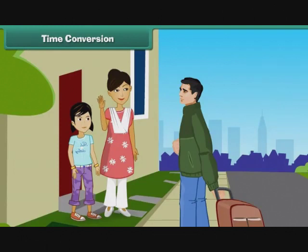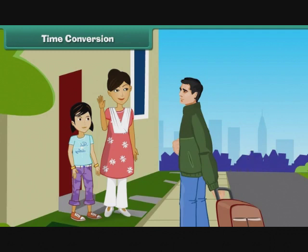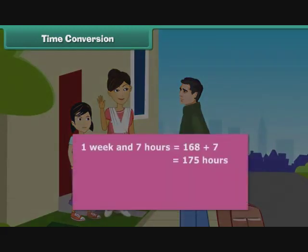Rashmi's father has left for Dehradun. He will be there for a week and 7 hours. Express his stay in Dehradun in hours. 1 week is equal to 7 days. 1 day is equal to 24 hours. 7 days is equal to 24 multiplied by 7, which equals 168 hours. 1 week and 7 hours is equal to 168 plus 7, which equals 175 hours.